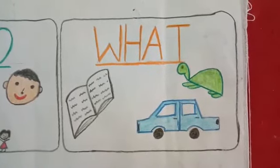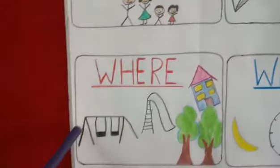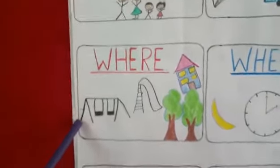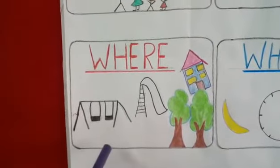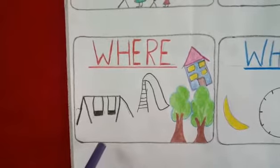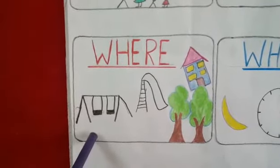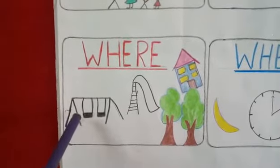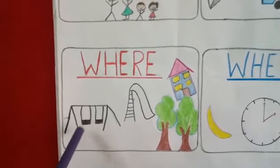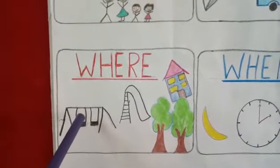My next question word is WHERE. WHERE tells us about the place. Where do you go to play? I go to play at park. So park is a place. So WHERE always tells you about the place or the position.